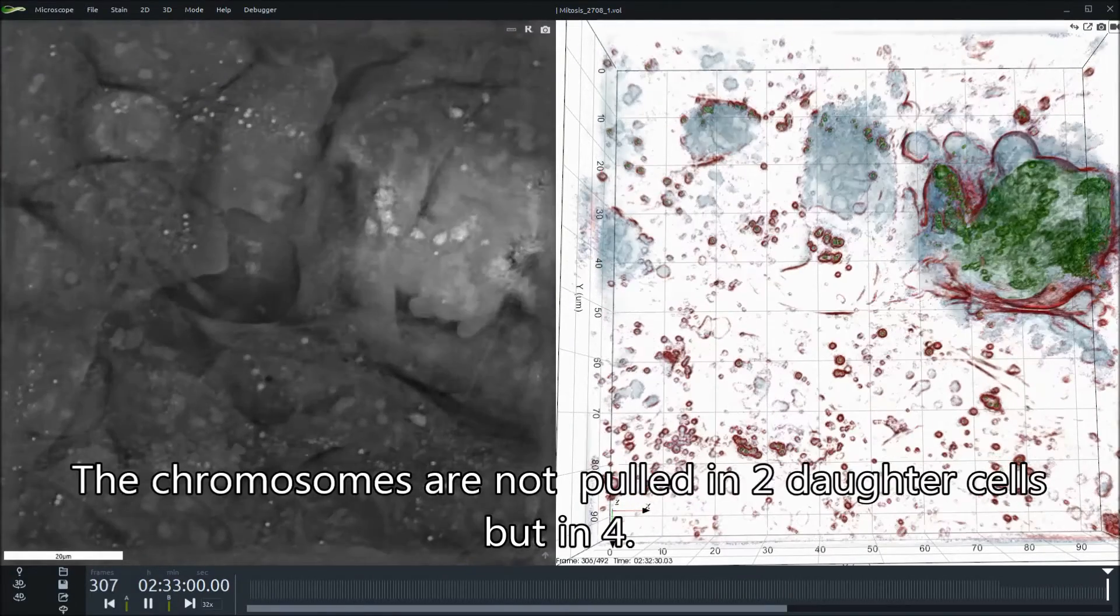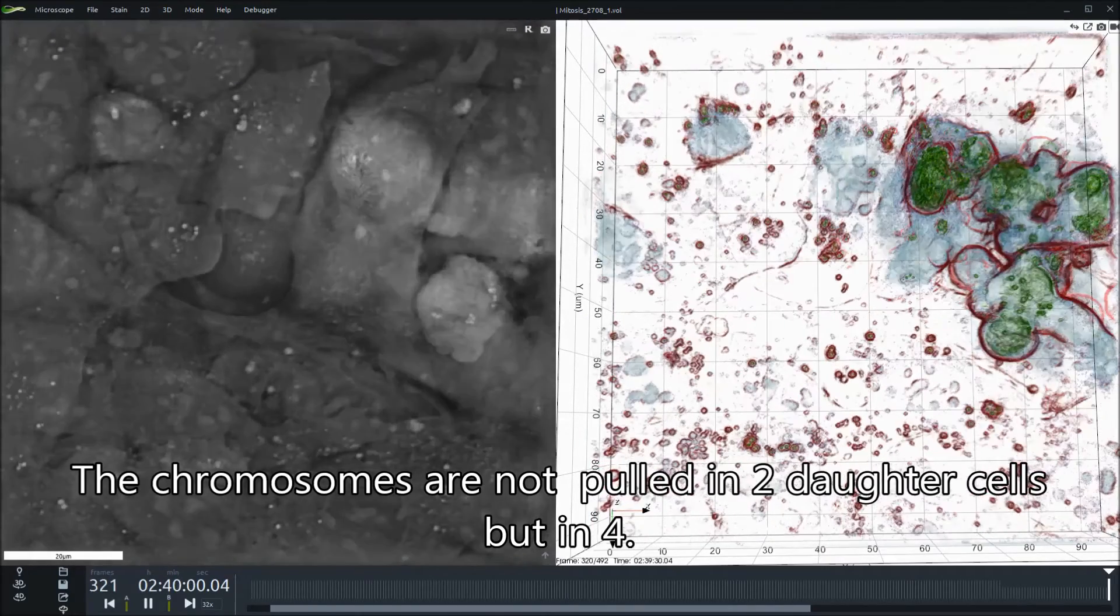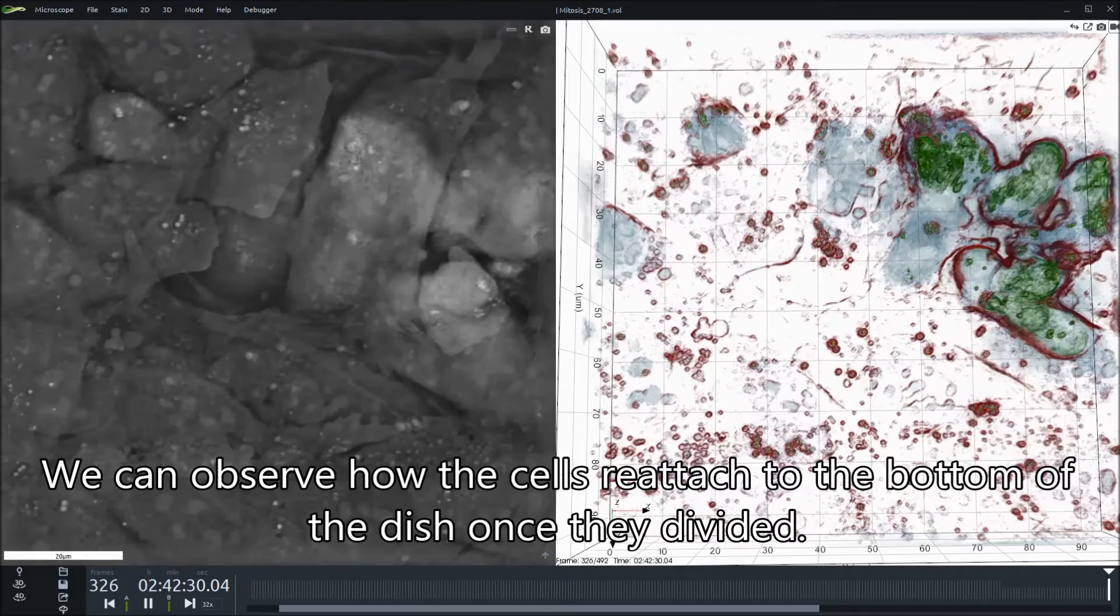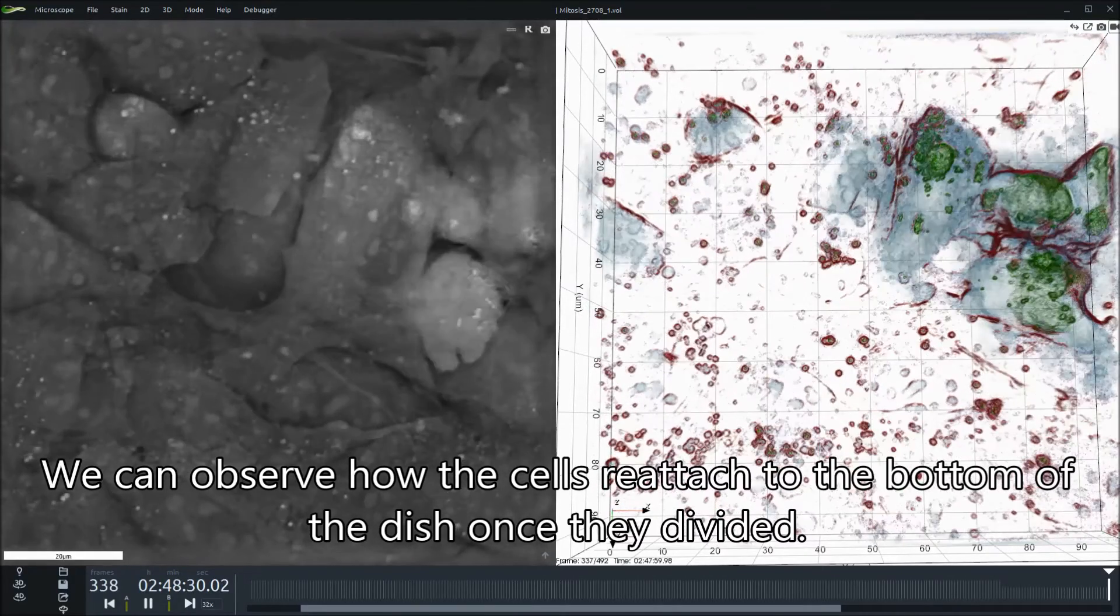The chromosomes are not pulled in 2 daughter cells but in 4. We can observe how the cells reattach to the bottom of the dish once they divide.